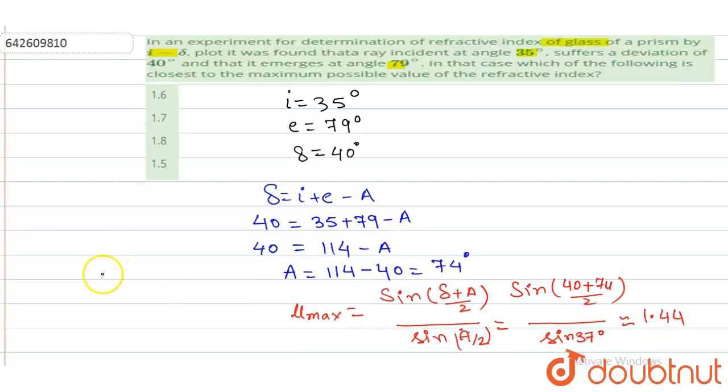If we talk about the options, the nearest option of this question will be 1.5, so option B is correct. I hope you have got your answer. Thank you.